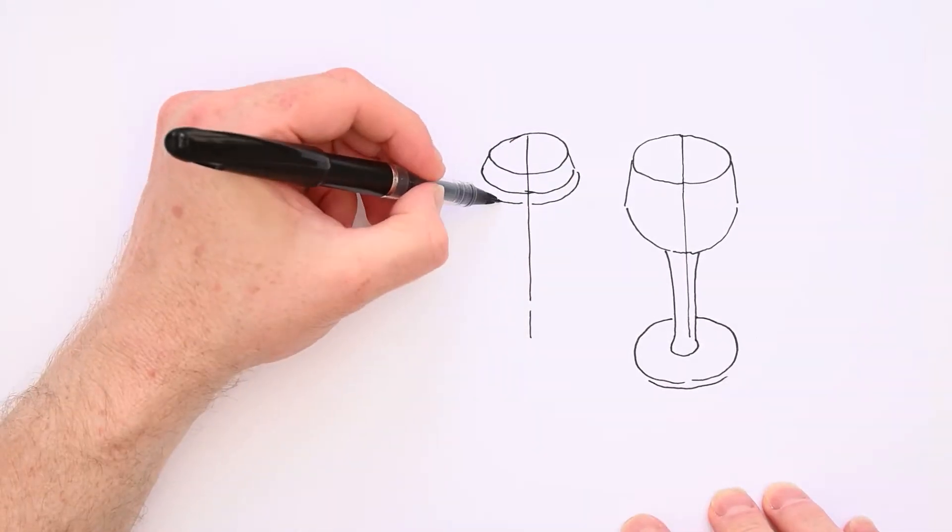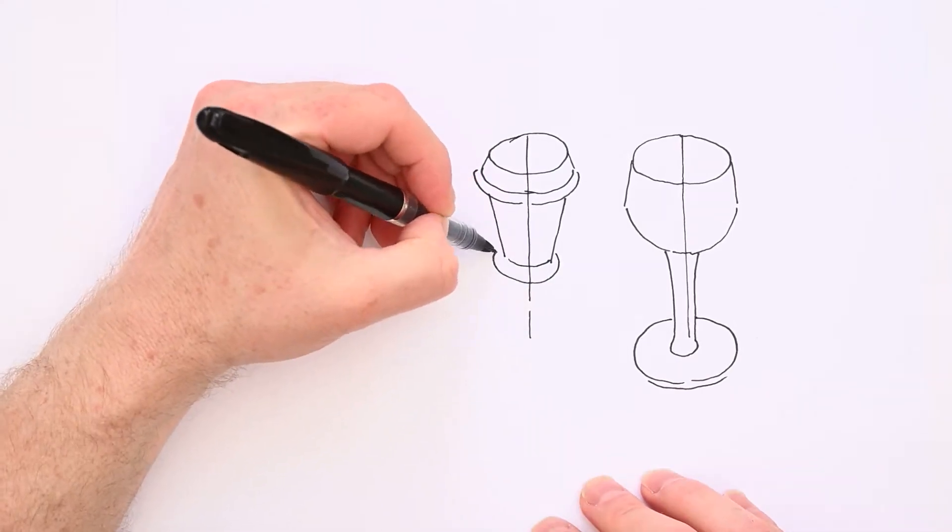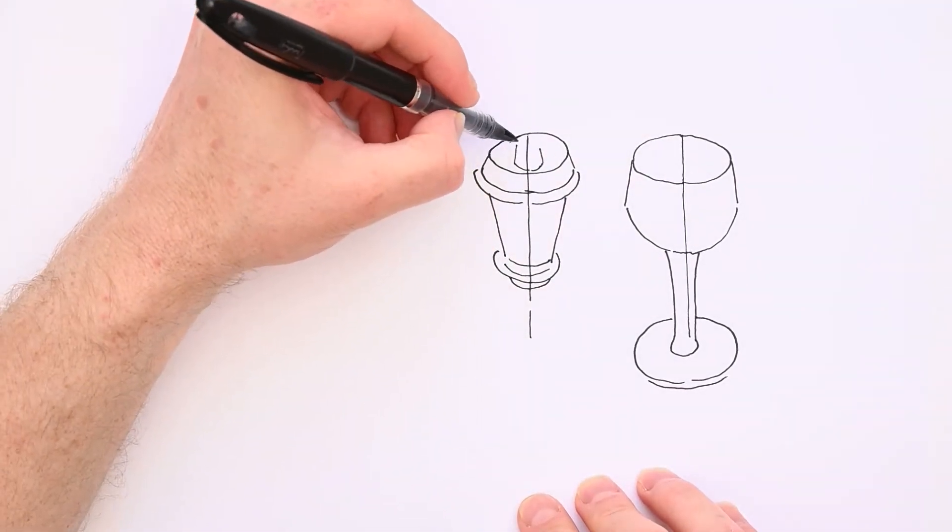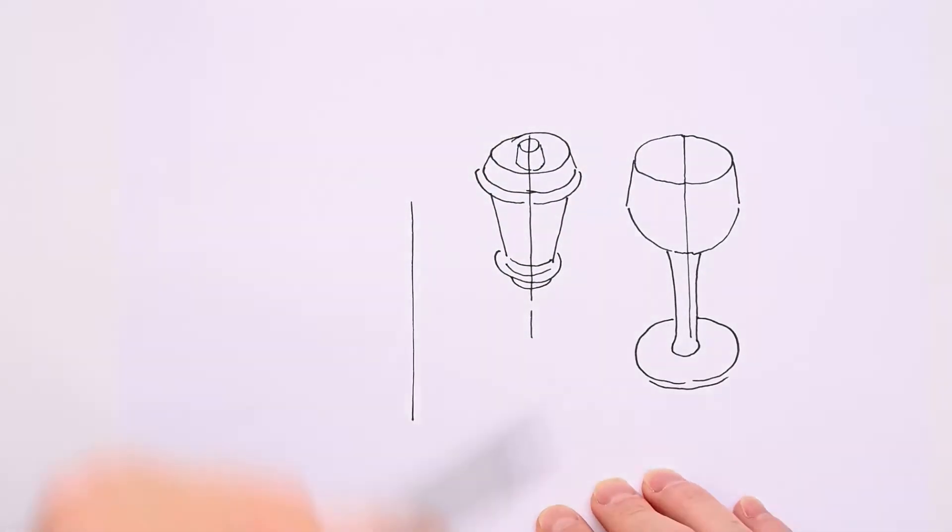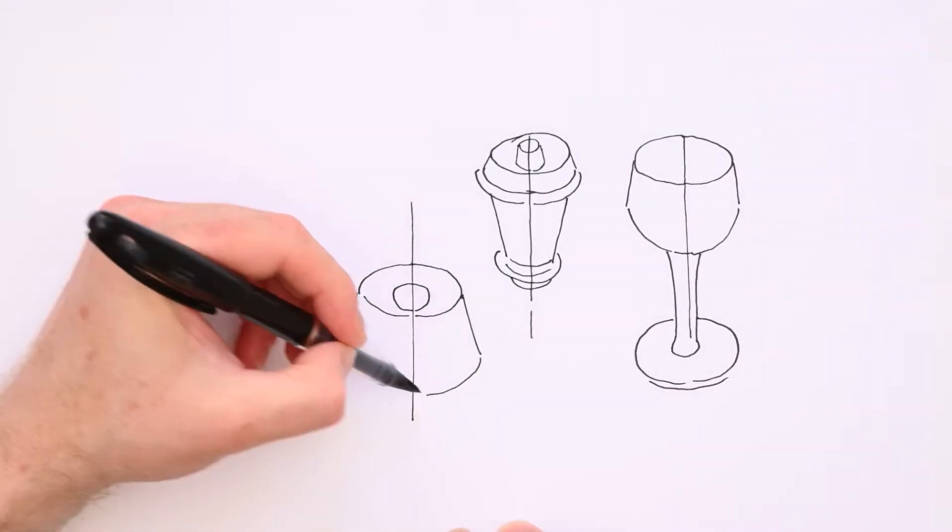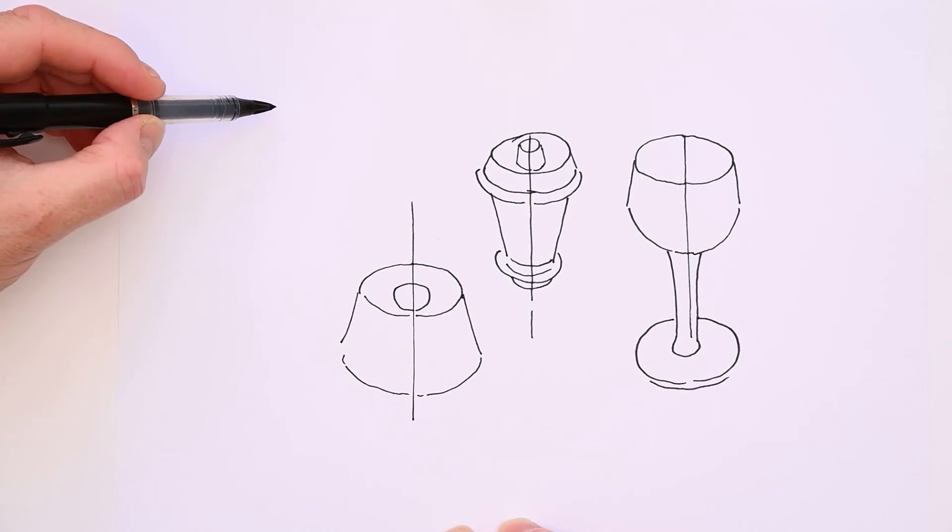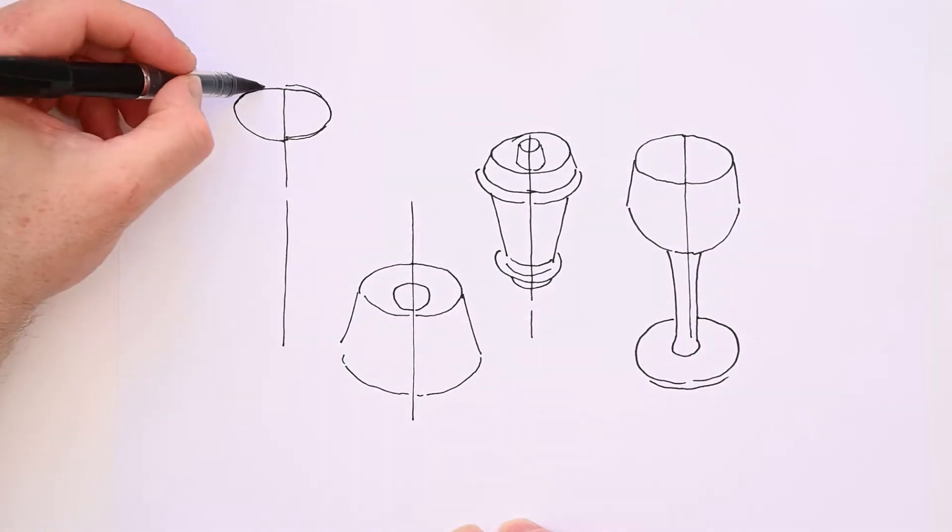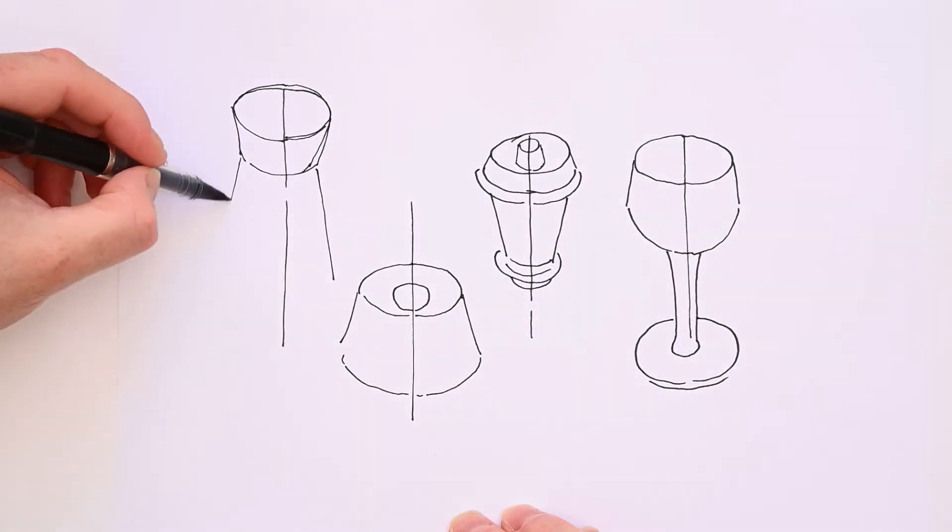This exercise trains you to better freehand draw ellipses in perspective, and it is an exercise that you can do always and everywhere to keep your hand practiced. You don't need inspiration or reference images or models for it, although it does help if you can also look at ellipses in perspective in real objects.